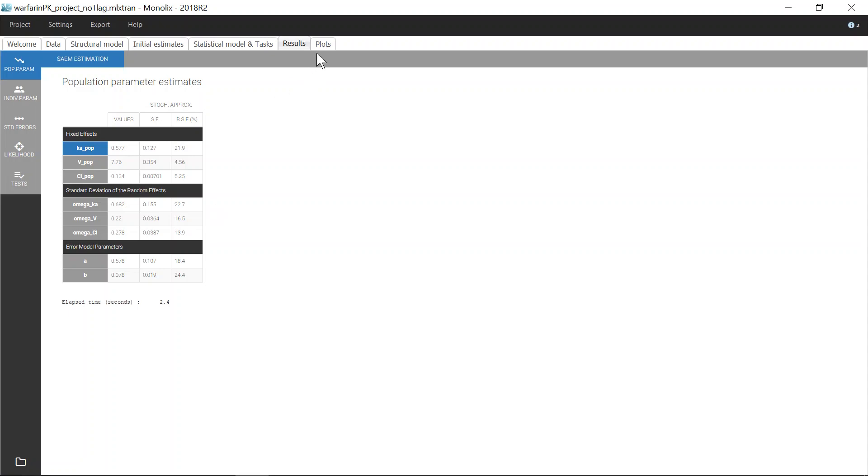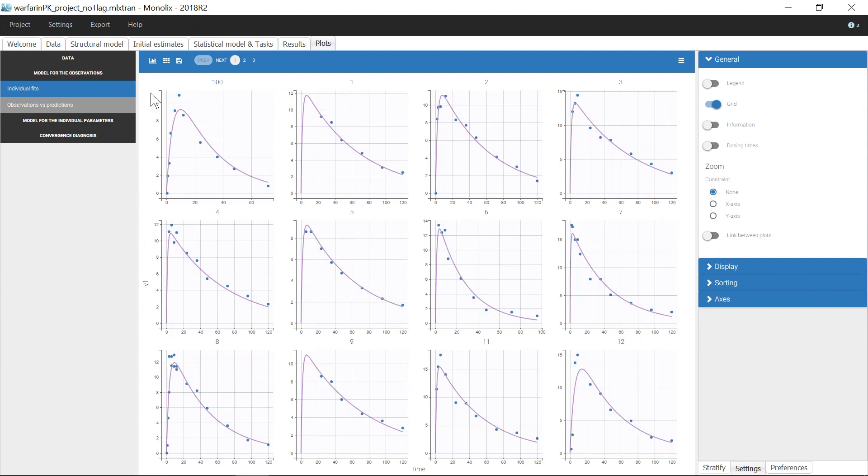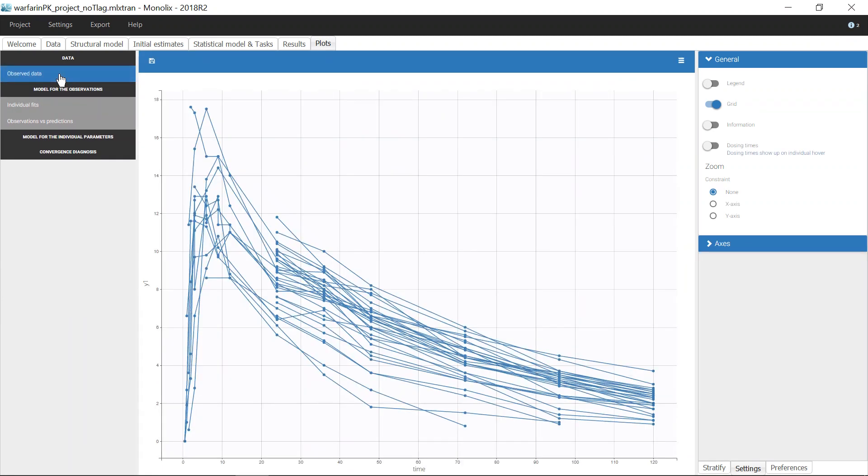This uncertainty is explained by the lack of information in the data. Indeed, as we can see on the plot of the observed data, 19 of the 32 patients have no measured data in the first 24 hours after taking the drug. Therefore, these subjects give little information on the absorption process for the drug.